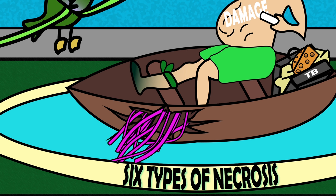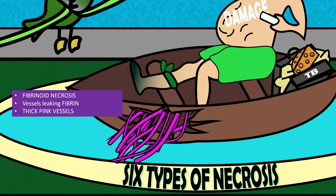Fibrinoid necrosis is up first. Nick is in a boat, which could also be referred to as a vessel, and the vessel has a big hole in it and is leaking thick pink fibers — fibers mean fibrinoid. In fibrinoid necrosis, blood vessels leak a protein called fibrin and it makes vessel walls pink colored and thicker. This could be because of things like hypertension or even antibody deposition on the vessel walls.